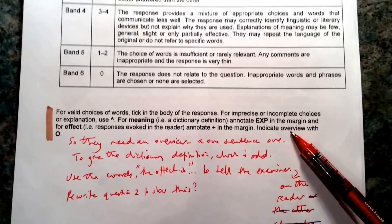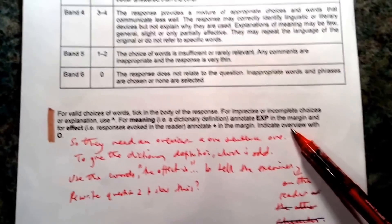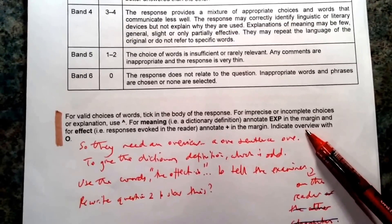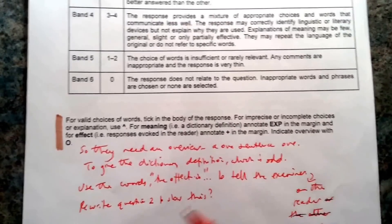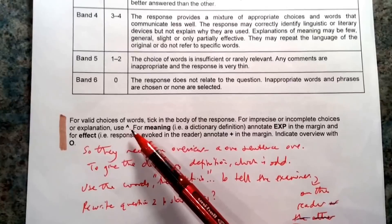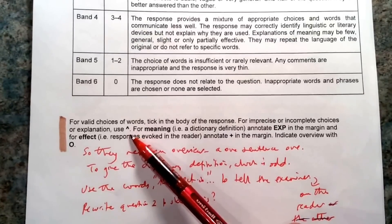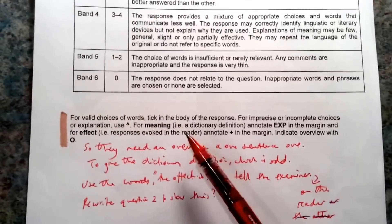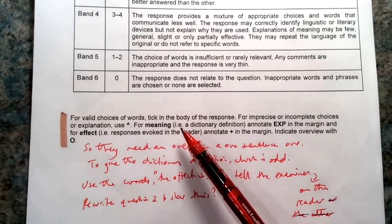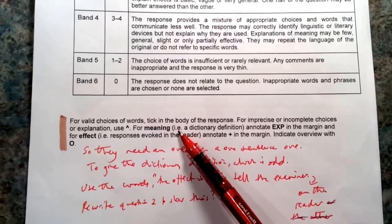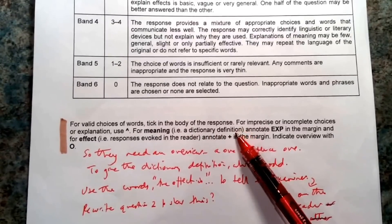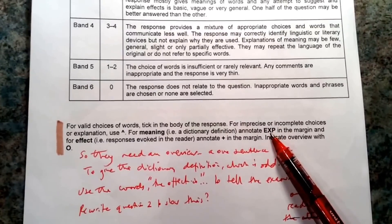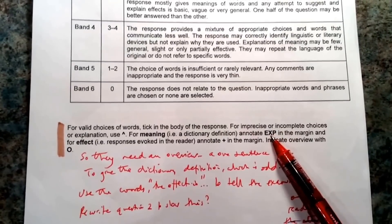I was curious to know why my own students didn't get full marks, and I couldn't find a clue in the mark scheme until I looked at the 0500 syllabus. Here's how the examiner is supposed to mark: for imprecise or incomplete choices or explanations, they use an upside-down V. Then for meaning — ie, that means 'that is,' not 'for example' — it means exactly a dictionary definition. So the examiner wants you to write a dictionary definition of the words you're looking at.